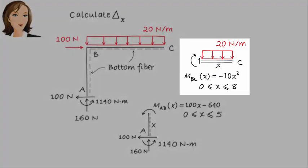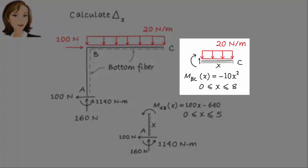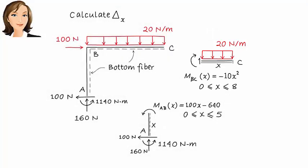Then we apply the moment equilibrium equation to get MAB. We do the same for member BC. Here, I decided to use C as the starting point, so x is going from right to left. This makes the free body diagram simpler to deal with. Summing the moments about the cut point, we get MBC equals negative 10x squared.